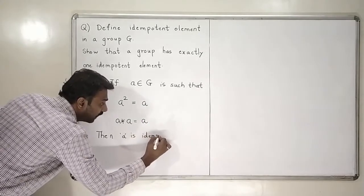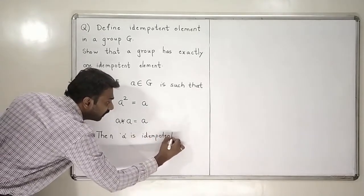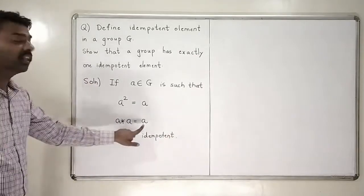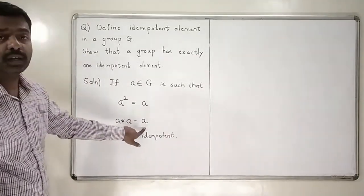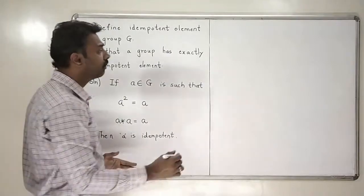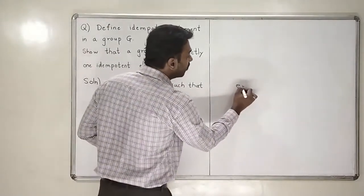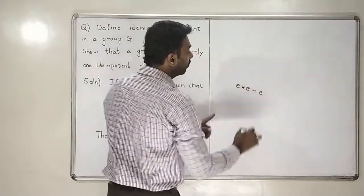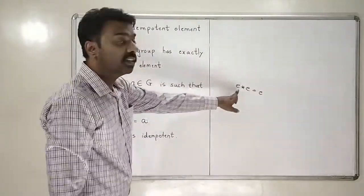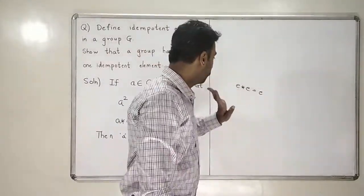Now, as a guess, can we just simply make a guess that which element satisfies this property that a into a is again equal to a? Clearly, one thing comes in your mind is that e star e will be always equal to e. So, this clearly means that e is the idempotent element of the group.